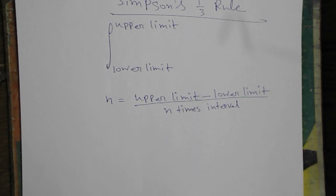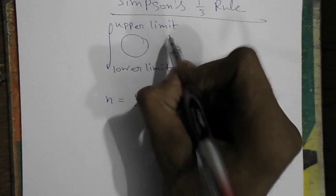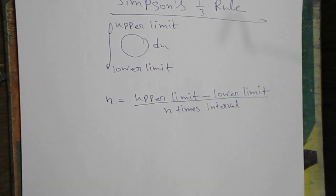Suppose there is a question solve the integration by taking 4 intervals or 6 intervals or 10 intervals. It will depend on the question. And here we will get the actual sum that we have to solve. So we are coming to the actual sum.